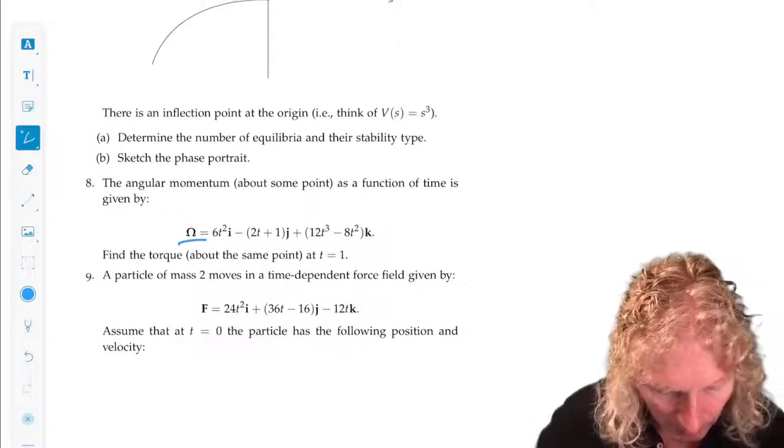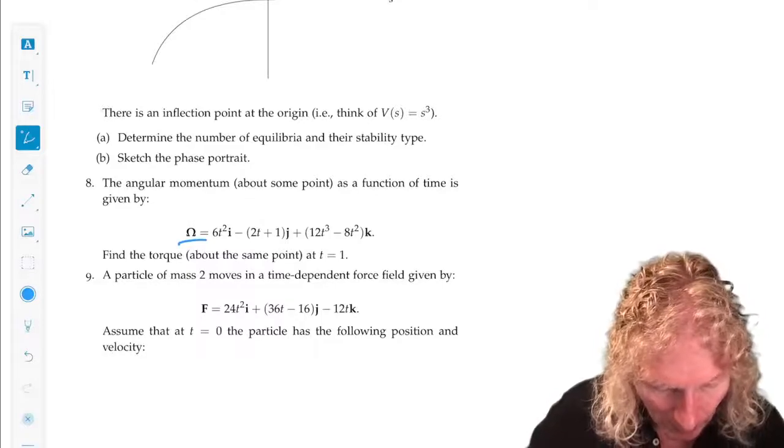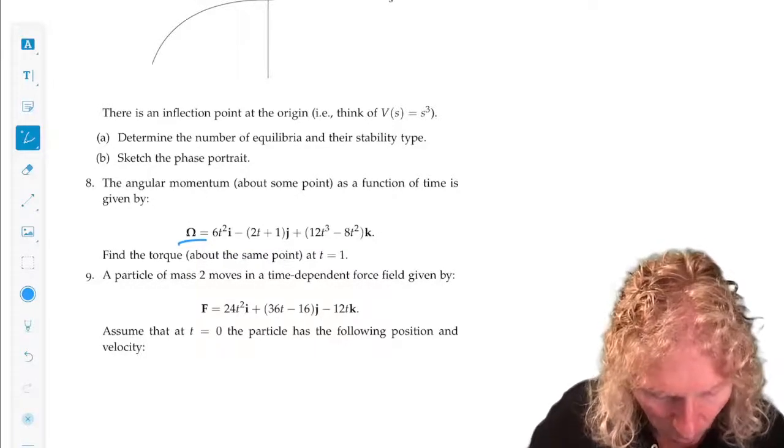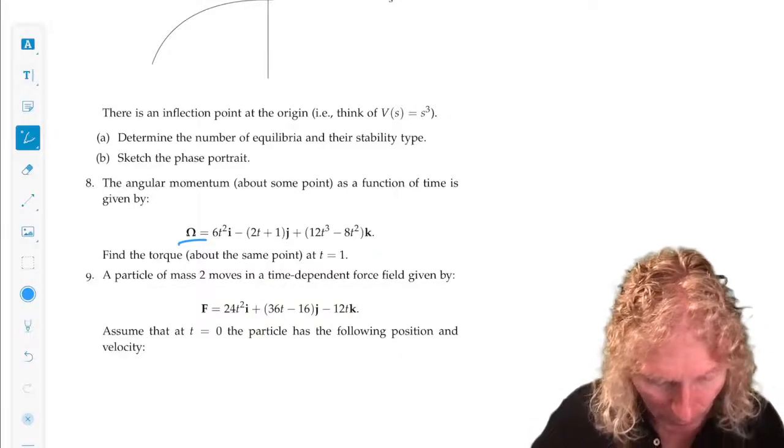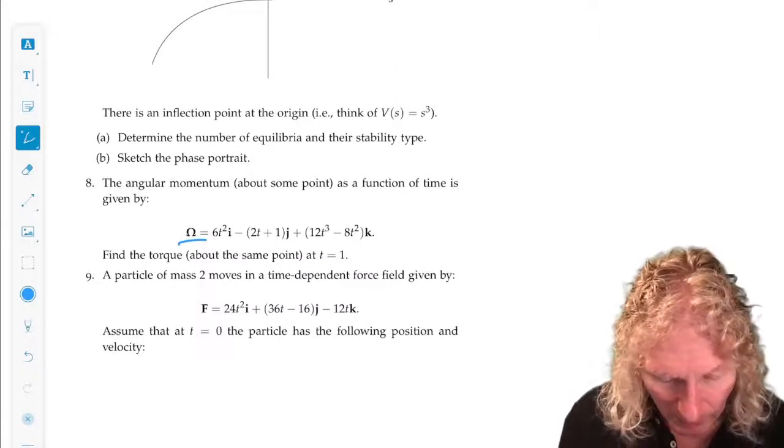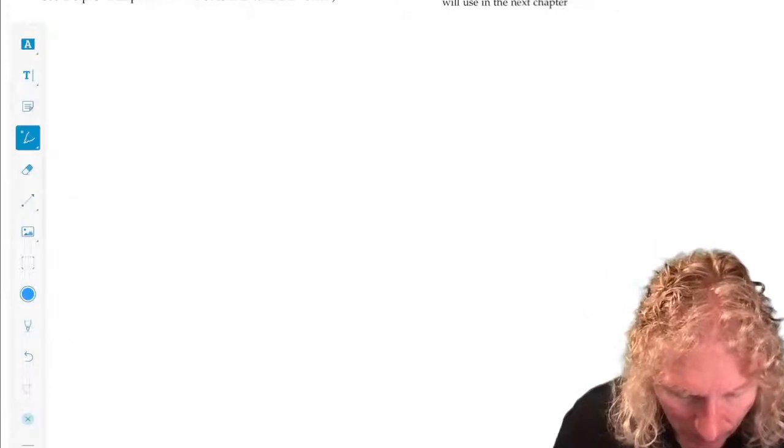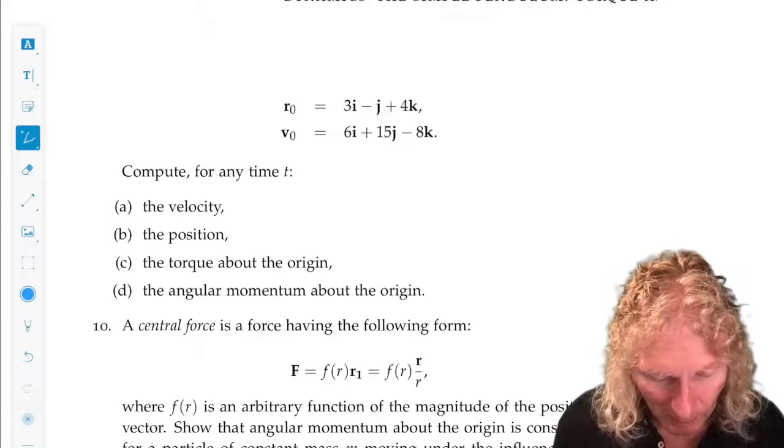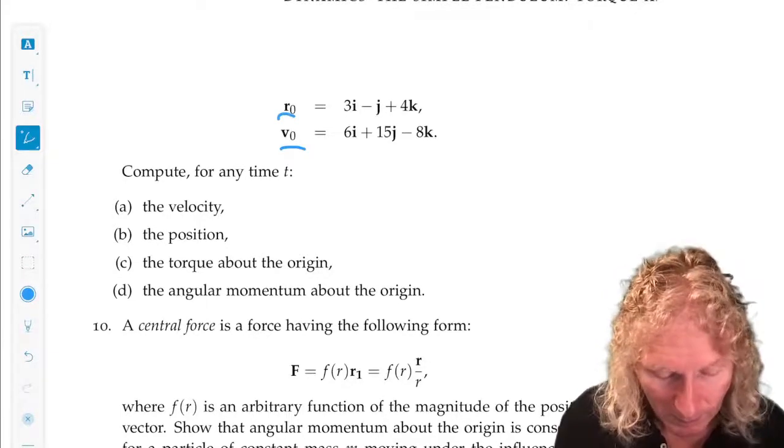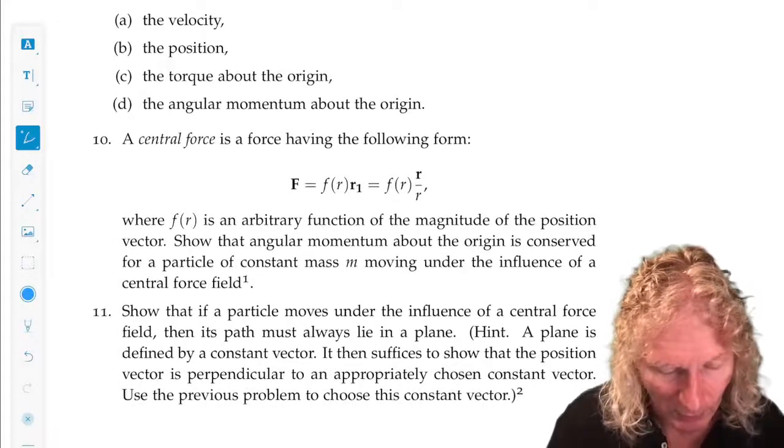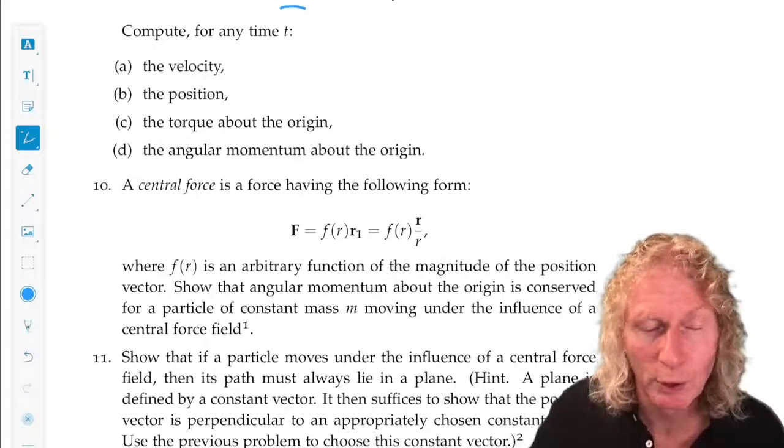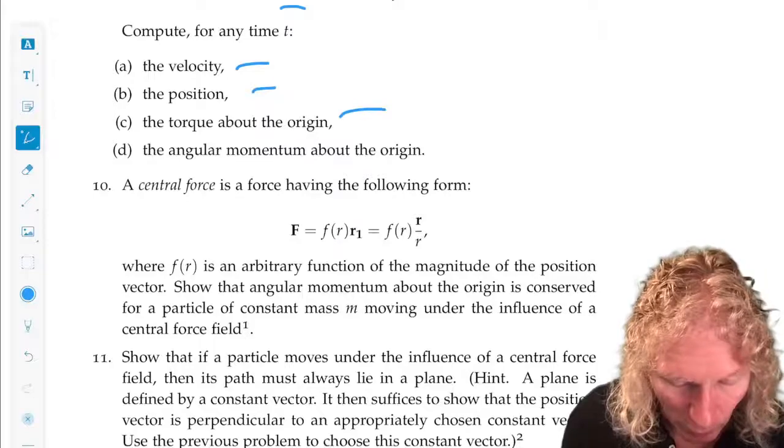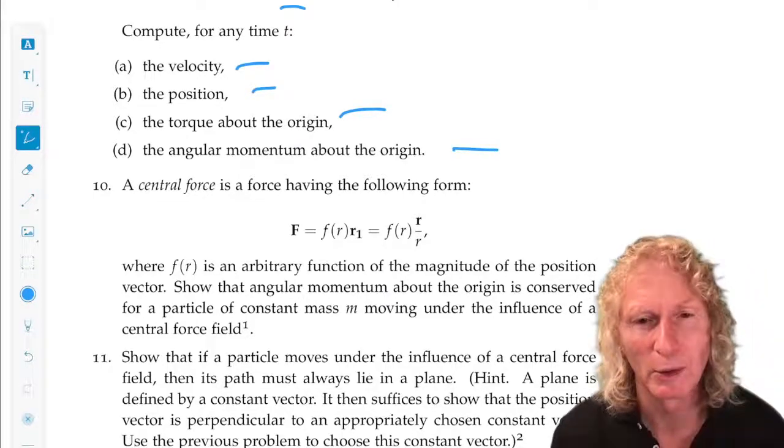Problem nine, you're given a particle of some mass 2, moves in a time dependent force field. And then at time zero, these are the initial positions and velocities. It's moving in three dimensions and then I want you to compute for any time the velocity, position, torque about the origin, and angular momentum about the origin.